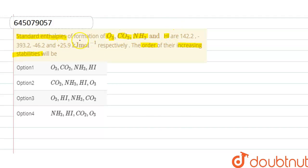So here we have standard enthalpies of formation. For ozone it is 142.2, for CO2 it is minus 393.2, for NH3 it is minus 46.2, and for HI it is plus 25.9.